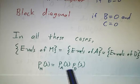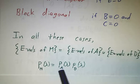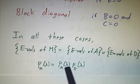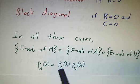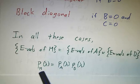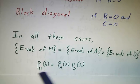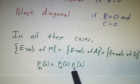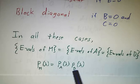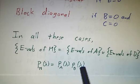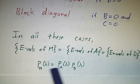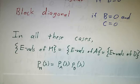So if lambda is an eigenvalue of A, then P_A(lambda) is zero, which makes P_M(lambda) zero. And if lambda is an eigenvalue of D, then P_D(lambda) is zero, and so P_M(lambda) is zero.